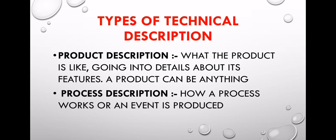Types of technical description: the first type is product description. Product description describes what the product is like, going into details about its features. A product can be anything. The product description will show your description and how to create a new product.